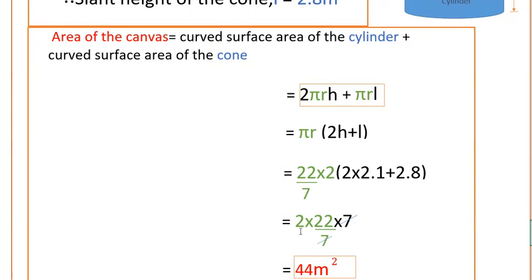So cancel 7, 7 here, that is 2 times 22, that is 44 meters square. So that is the area of the canvas.